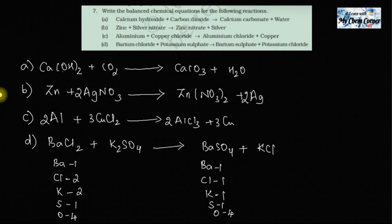The discrepancy is in potassium and chlorine — both are 2 on the left but only 1 on the right. If I just put a coefficient of 2 in front of KCl on the right, then Cl becomes 2 and K becomes 2. All remaining atoms are already balanced, so placing 2 in front of KCl gives the balanced equation.